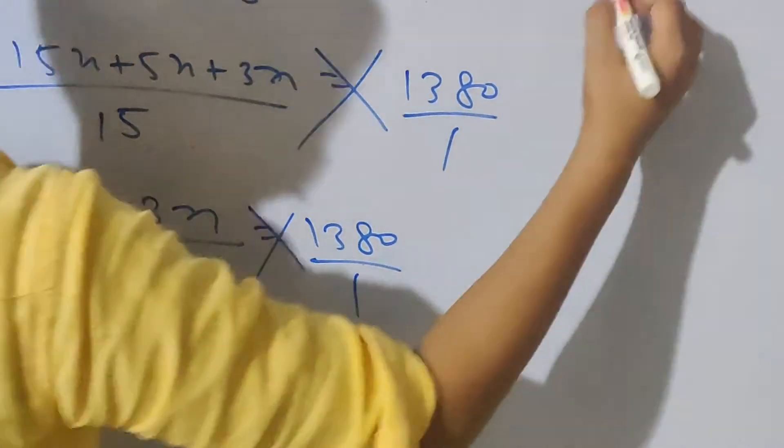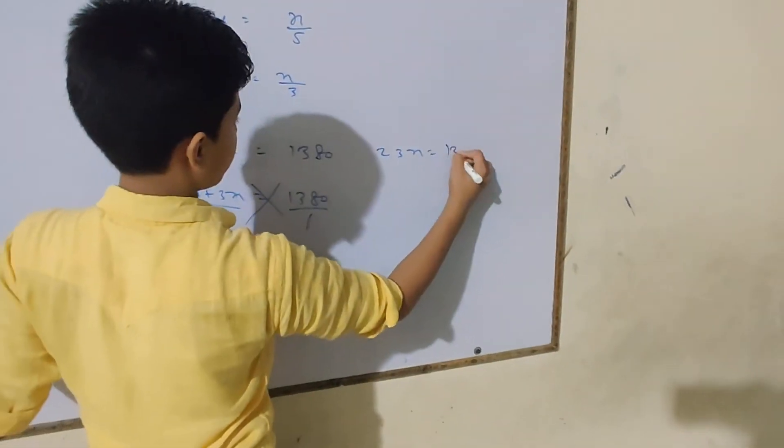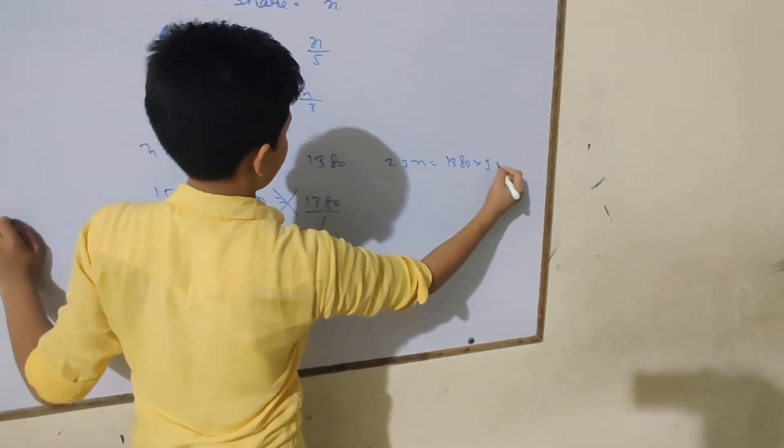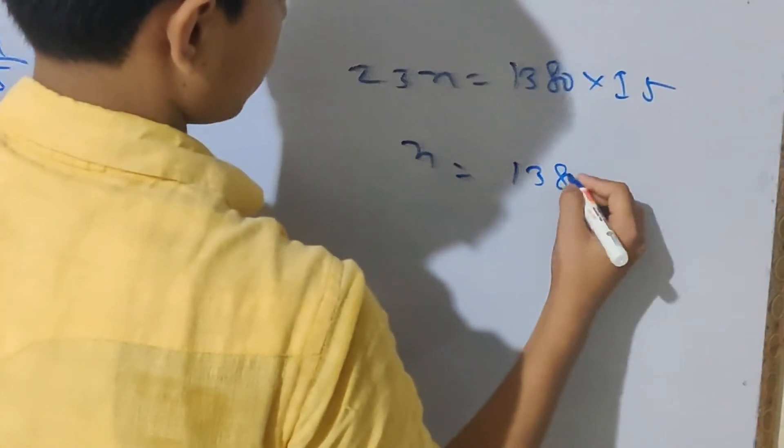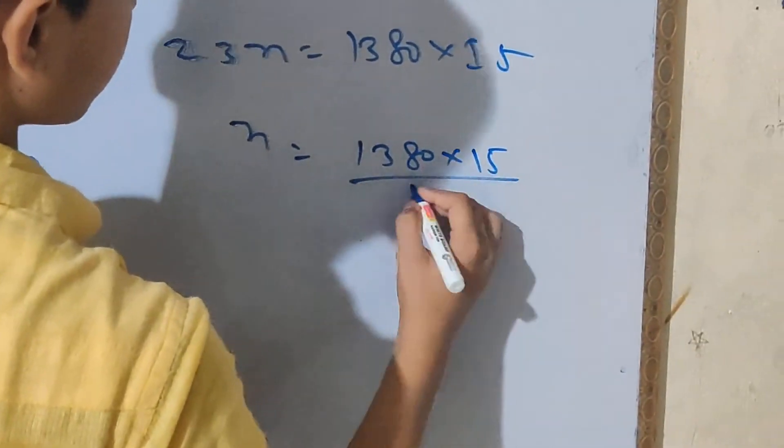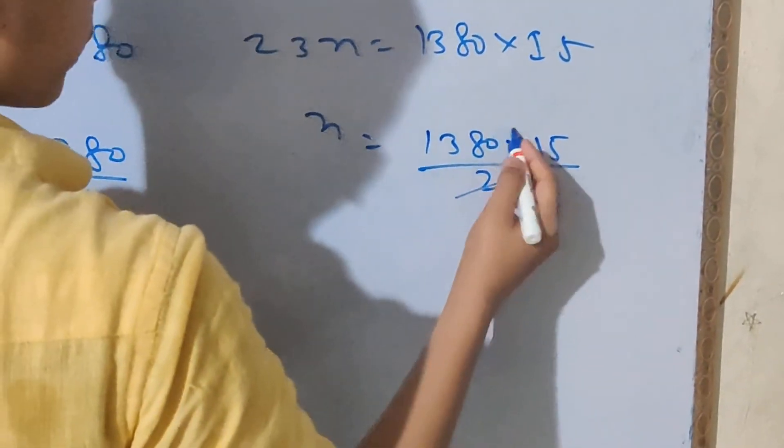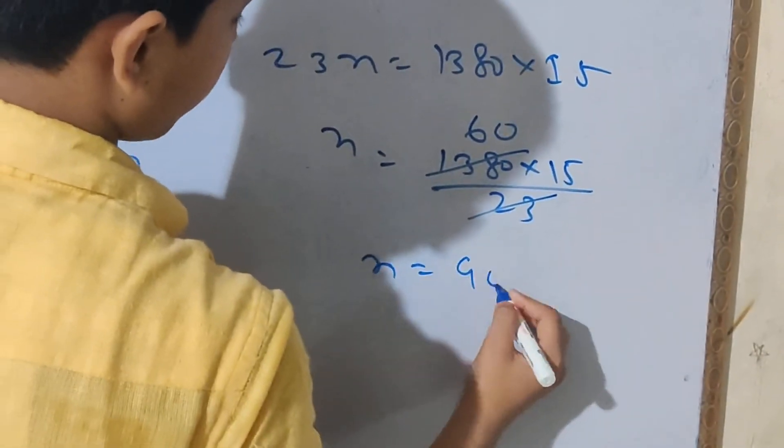So 23x over 15 equals 1380. Therefore x equals 1380 times 15 divided by 23, which equals 900.